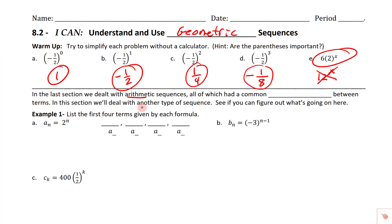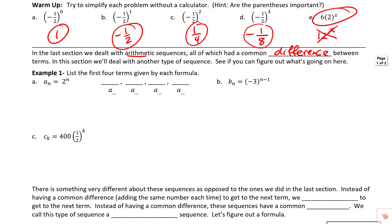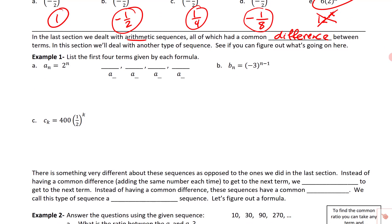In the last section, we dealt with arithmetic sequences, which all had a common difference between each pair of terms. In this section, we're going to deal with a different type of sequence. We call this the nth term formula, the general formula, or the explicit formula — those are all different words meaning the same thing.